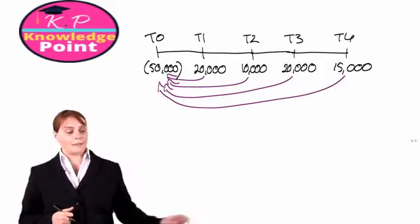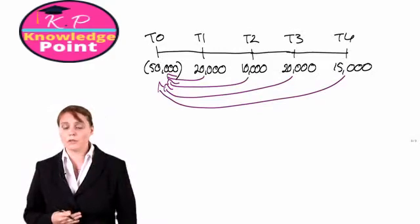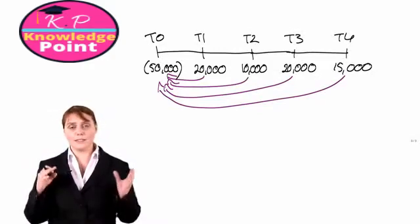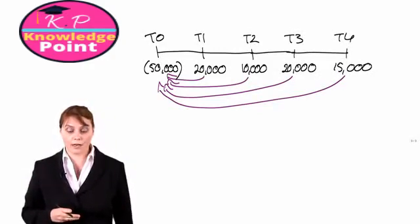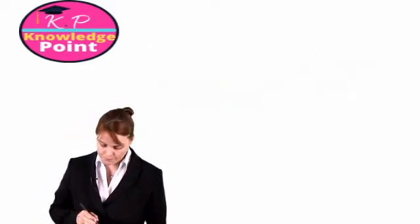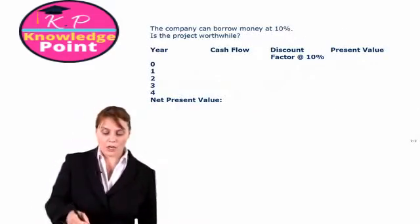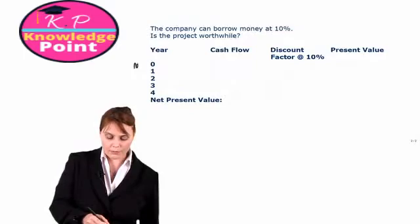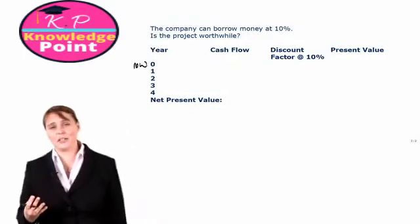Now in any net present value question, the most efficient way of doing it is to set up a little table for yourself. So we want to look at, for each year, starting with the present, so we say year zero.